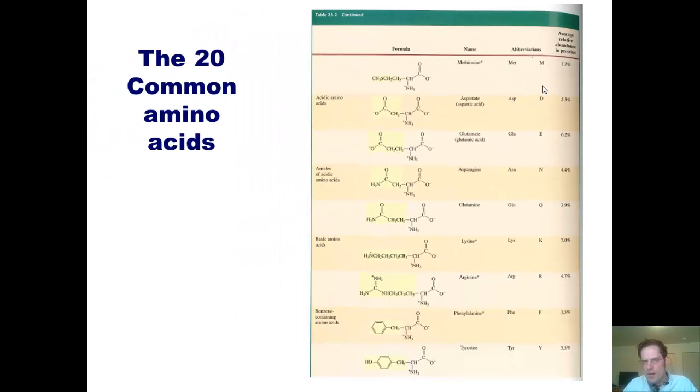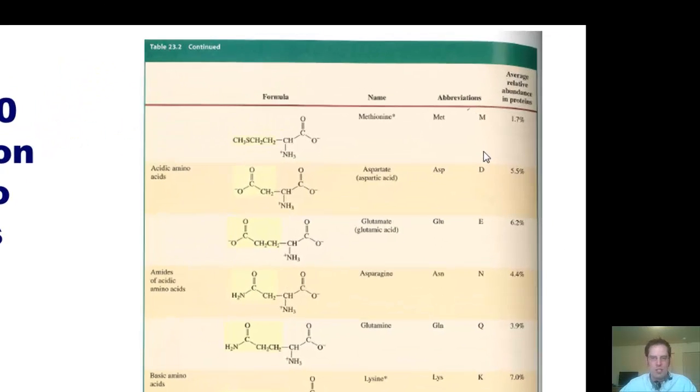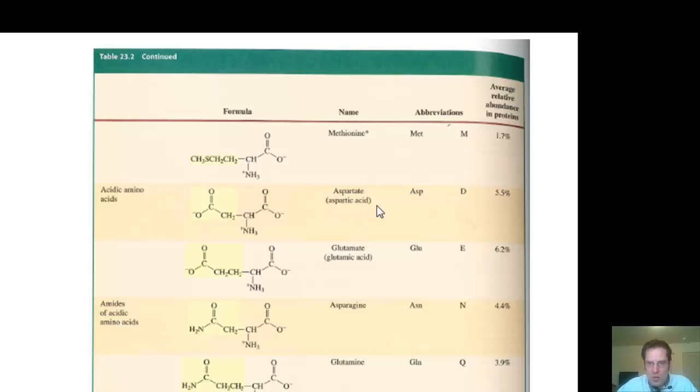I should warn you, though, that not all of the one-letter abbreviations are simply the first letter of the amino acids in name. That would be impossible since some of them start with the same letter as each other. Hence, aspartate, which is shown right here, couldn't possibly have the letter A be its one-letter abbreviation because that is the same letter that alanine, another amino acid, uses. That's why we give aspartate this one-letter abbreviation, letter D. Don't ask me why they picked D.